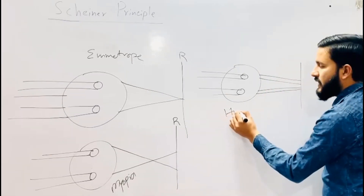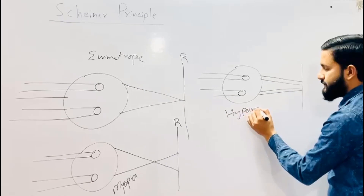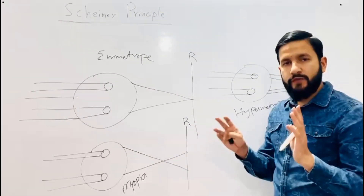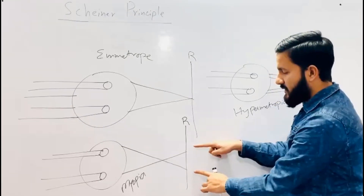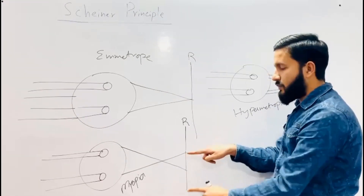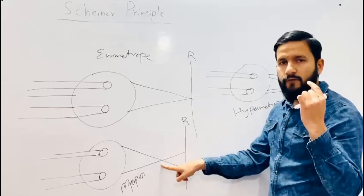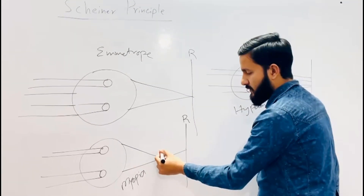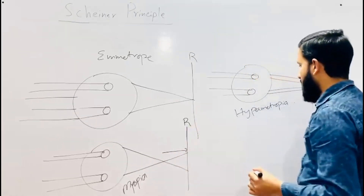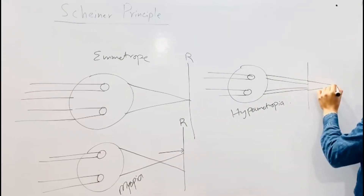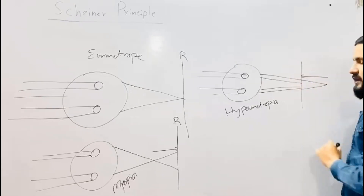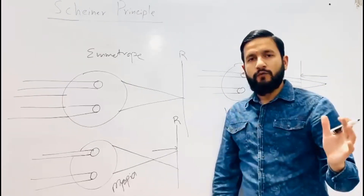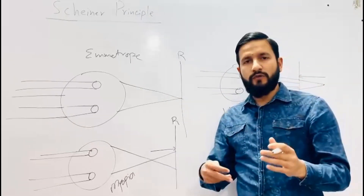What you have to do is move the target in such a way that these two light spots are converted into a single focus on the retina. In the case of myopia, we shift the focus forward, and in the case of hypermetropia, we shift the focus backward. When a single focus is formed, the movement of the target gives you the amount of refractive error present.